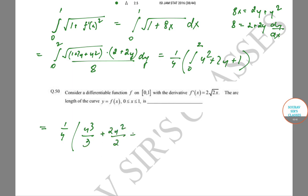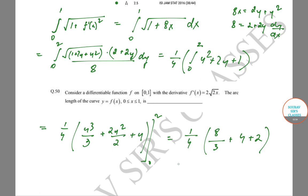This equals (1/4) times [y³/3 + y² + y] evaluated from 0 to 2, which is (1/4) times (8/3 + 4 + 2) = (1/4) times (8/3 + 6) = (1/4) × (26/3) = 13/6. So we have 13/6 as our answer. Now we move on to the next problem.